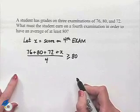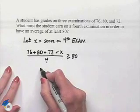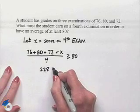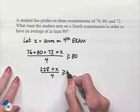To solve this inequality, we can begin by simplifying in the numerator. That would give us 228 plus x divided by 4 is greater than or equal to 80.